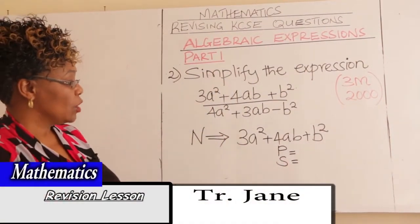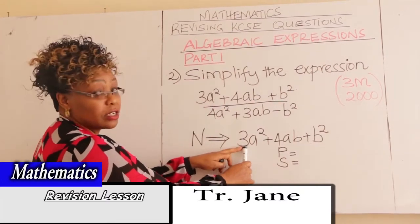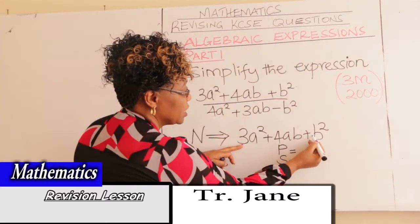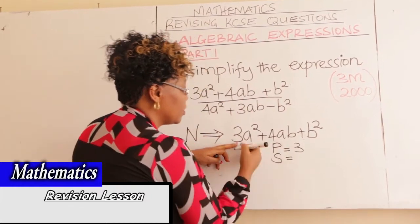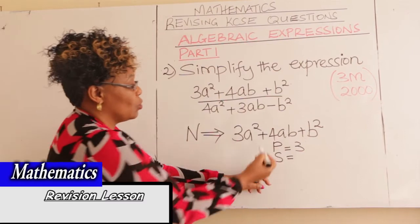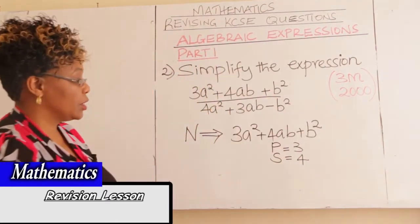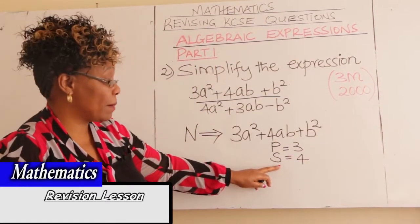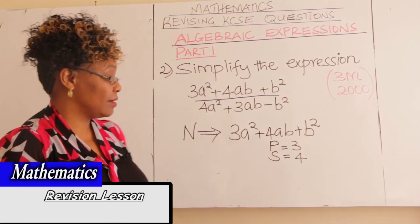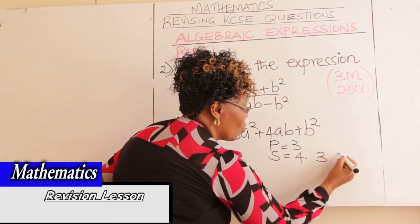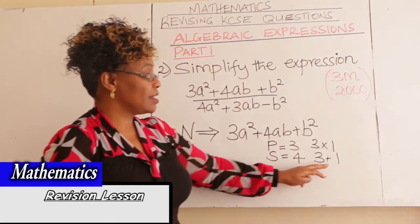What is the product of this expression? You take the coefficient of the first term and multiply by the coefficient of the last term: 3 times 1 gives you 3. The sum is the coefficient of the middle term, which is 4. Look for the two numbers that add to get 4 and multiply to get 3. The numbers are 3 and 1: 3 times 1 gives 3, and 3 plus 1 gives 4.